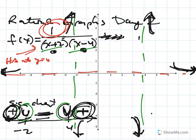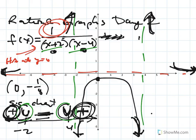It's also useful to get the y-intercept, even though it's not on the sign chart. Plug 0 in for all the x's: you get 1 over (0+2)(0−4), which is 1 over 2 times negative 4, so negative 1 eighth. It's useful to have that point. When we connect it all together, we get a strange-looking graph.